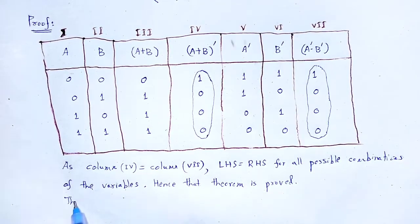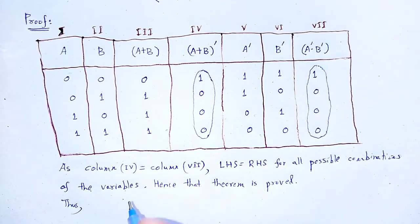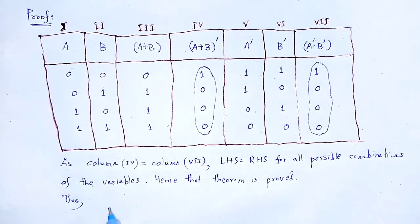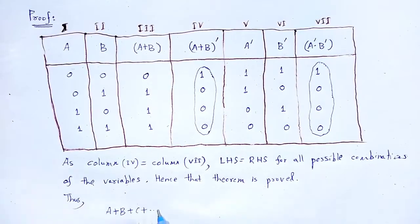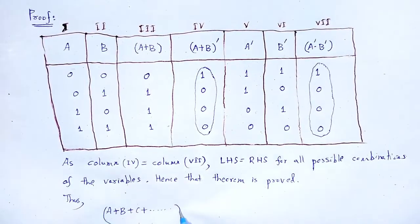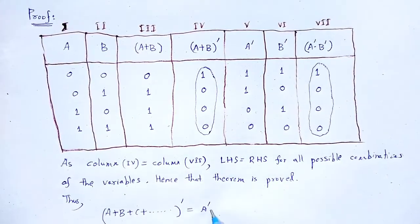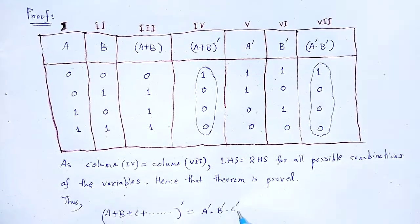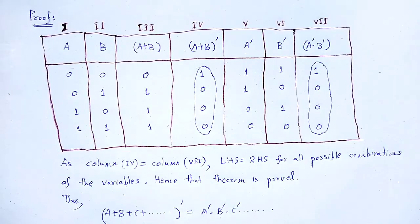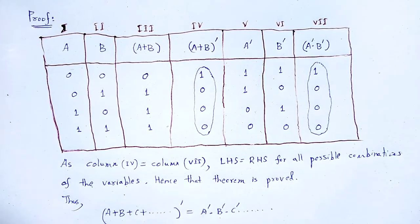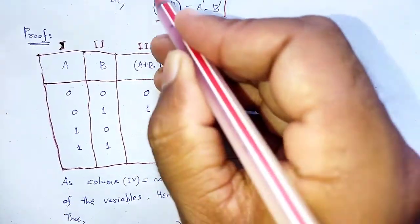Similarly, for more number of Boolean variables: (A + B + C + ...)' = A' · B' · C' · ... and so that theorem is proved.